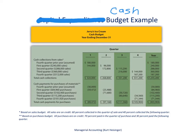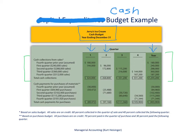Here's the cash budget for Jerry's Ice Cream for the year ending December 31, broken out by quarter with a year total at the far right. The first section is the cash collections from sales budget, and it's really all about timing — when do we expect to receive cash related to the sales we make, particularly when sales are made on account. There's often a lag between when we make the sale and when we collect the cash. The assumption here, per the footnote, is that all sales are on credit, and we'll collect about 60% in the quarter of the sale and about 40% the following quarter.